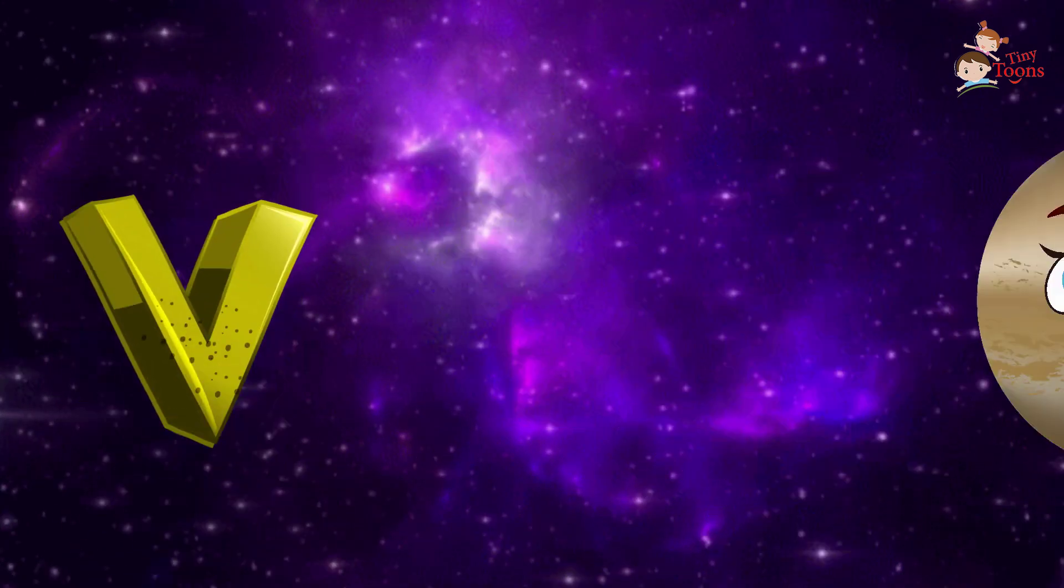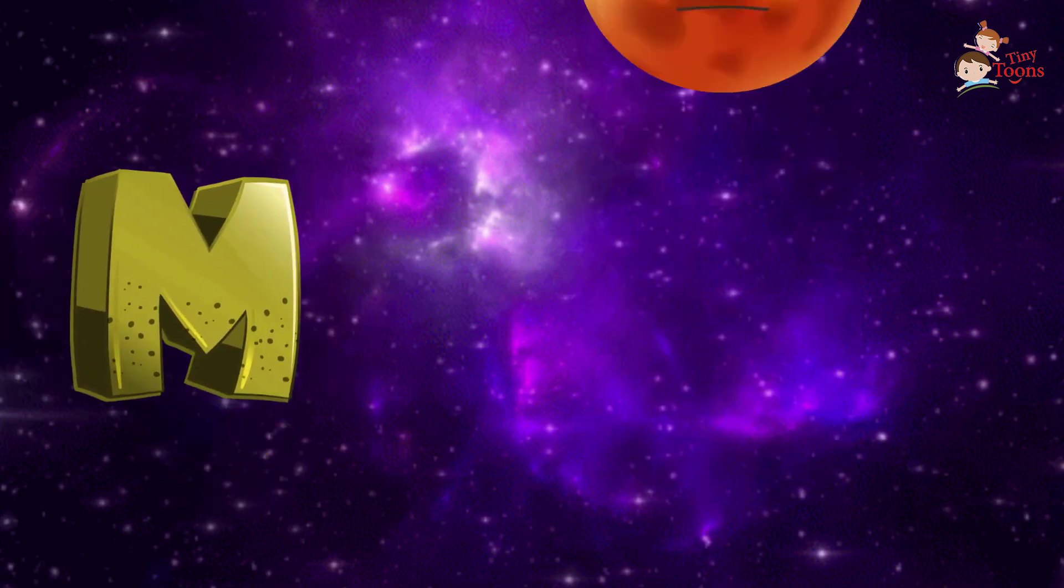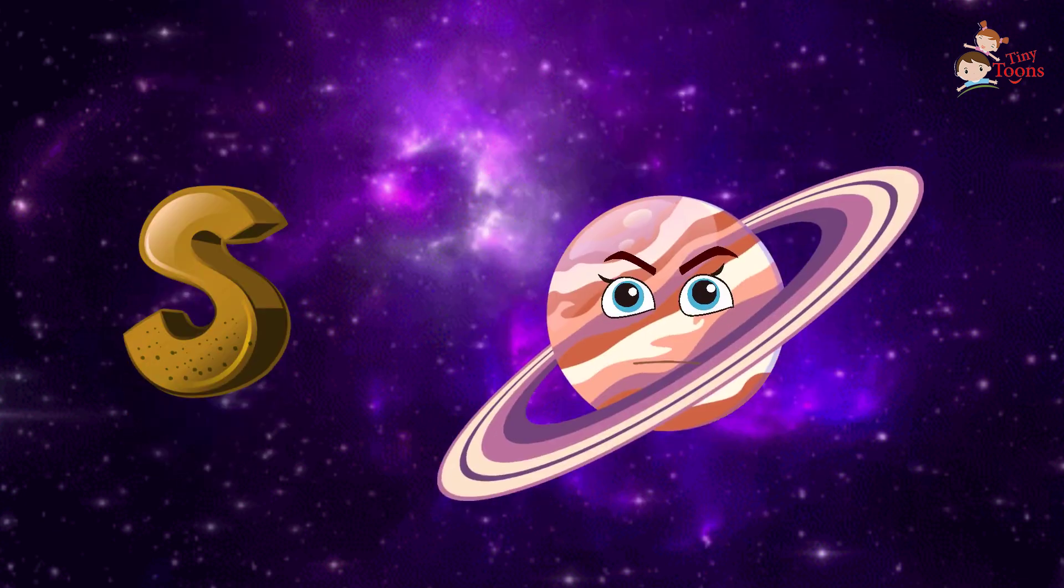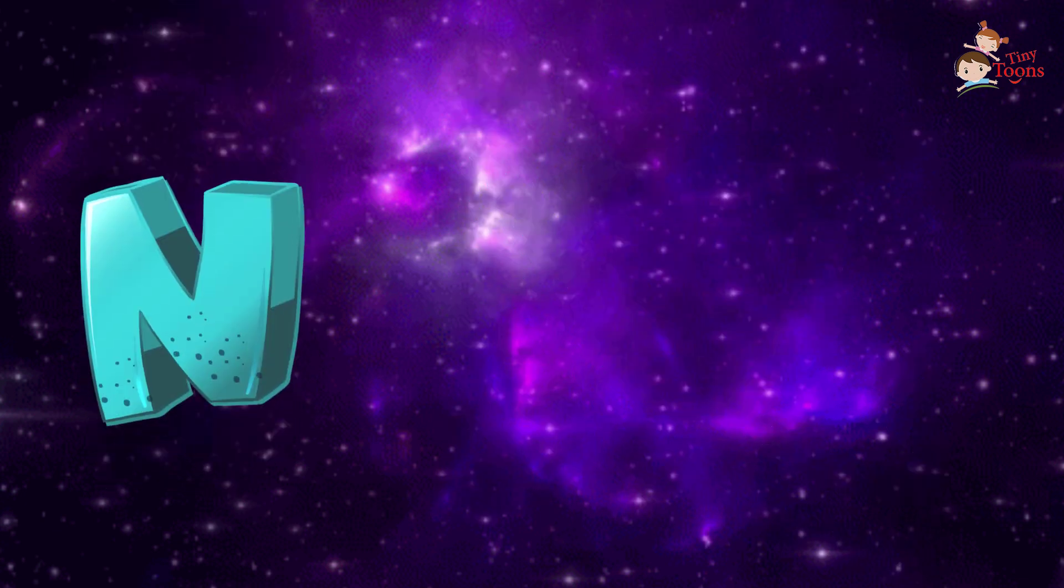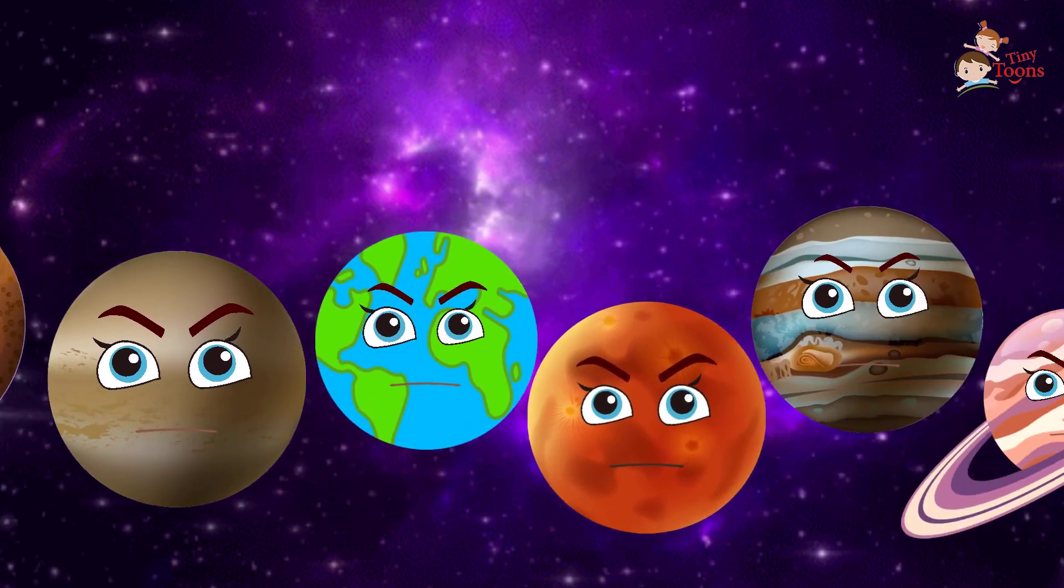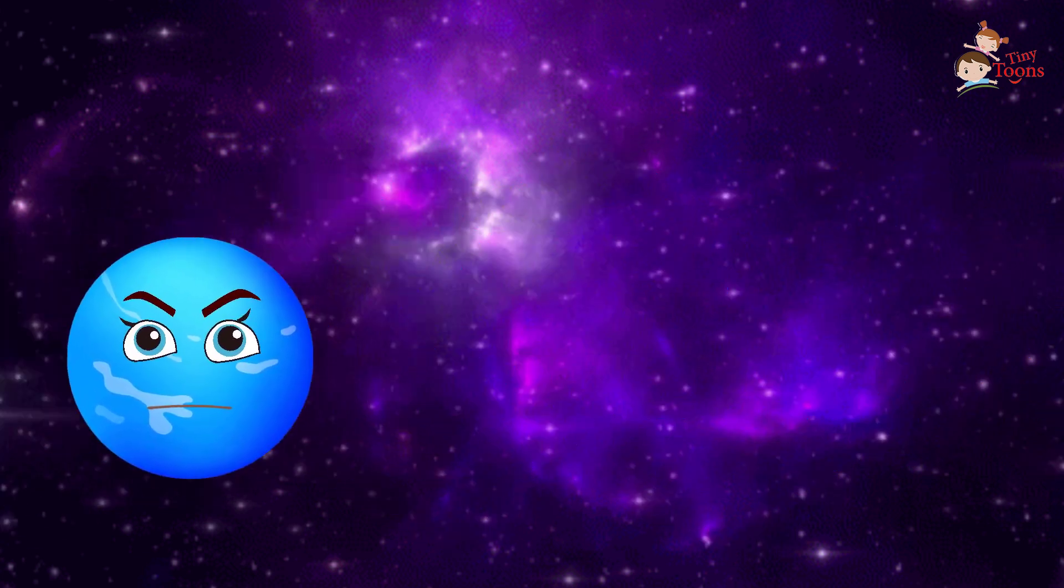M is for Mercury, V is for Venus, E is for planet Earth, M is for Mars, J is for Jupiter, S is for Saturn, U is for Uranus, N is for Neptune. My very easy method just speeds up names. My very easy method just speeds up names.